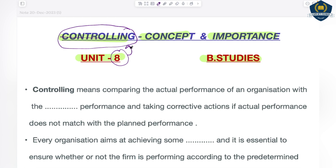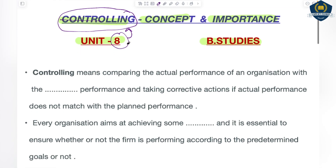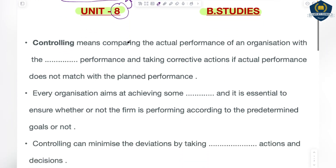In this unit you will learn what controlling is, why it is so important for an organization, and what actions are performed in controlling. This is the last function, but without it the whole management process is incomplete — it gives completeness to the process of management. So let's start with the very first part: its concept.